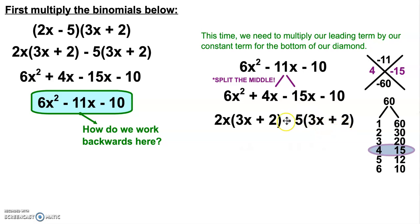Notice again that our parentheses are the same. This looks exactly like our distribution step from earlier. So I can bring together my factors and have 2x minus 5 and 3x plus 2.